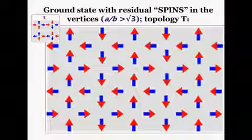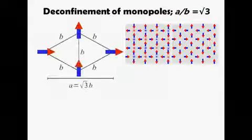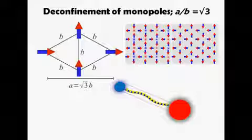There is, therefore, a ground state transition which occurs at A over B equal to square root of three. In this case, the spins around the vertex become equidistant, and the topologies T0 and T1 have the same energy.